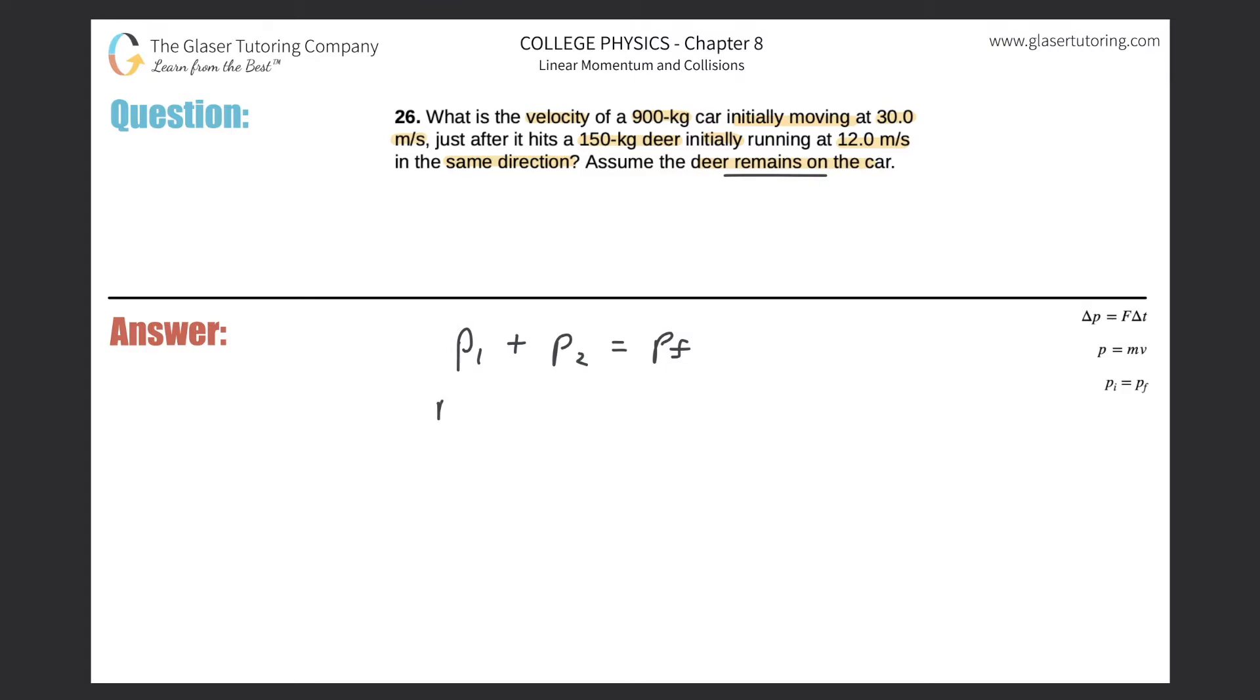So in other words, the mass of the first object multiplied by its velocity plus the mass of the second object multiplied by its velocity should equal the mass of the first object plus the mass of the second object. Because this is really the total mass multiplied by that final velocity of the whole system.